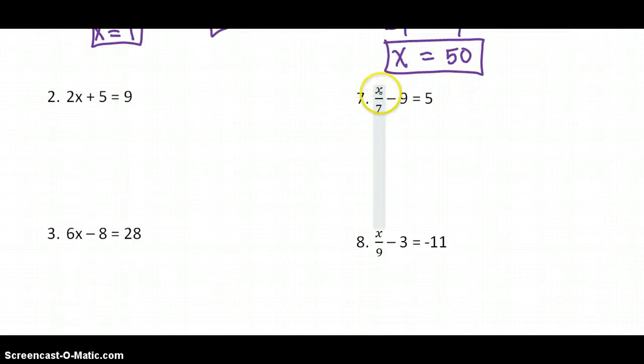Jump down to number 7 where we have a division problem. But before I worry about division, again, I need to undo the subtraction. The opposite of subtracting is addition. So we're going to add 9 to both sides. That makes the 9 cancel. Remember, whatever we do to one side of an equation, we do to the other.